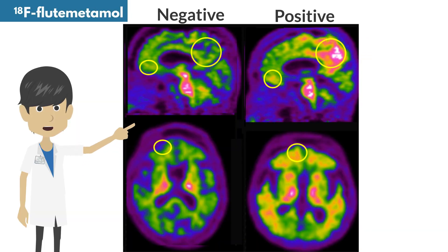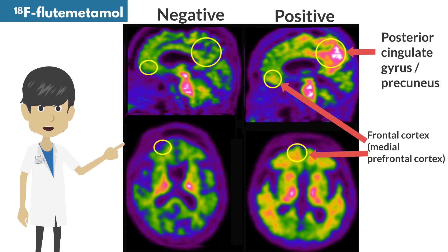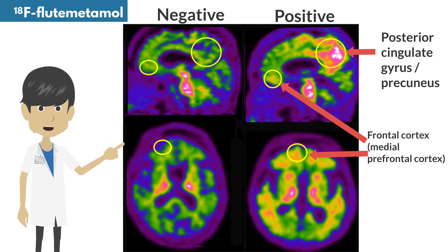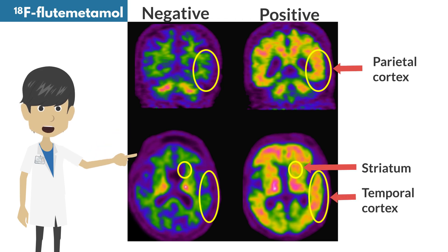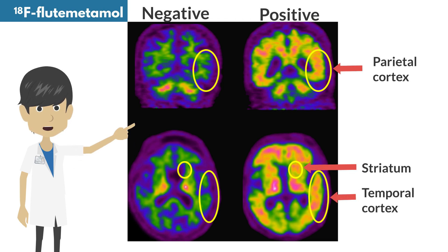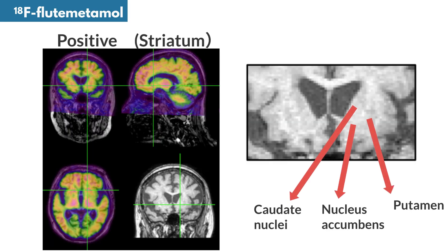Amyloid negative and positive findings in fluorine-18 flutemetamol PET: high accumulation is observed in posterior cingulate gyrus, precuneus, and medial frontal cortex in a positive case. Parietal cortex, temporal cortex, and striatum also show high accumulation in a positive case. Striatal accumulation is located mainly in the anteroventral part of the striatum, including the nucleus accumbens.